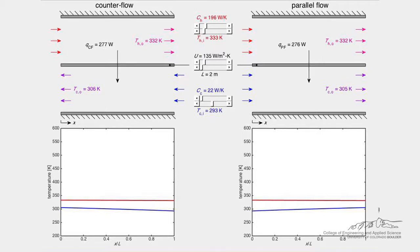As a function of normalized position along the length of a counterflow heat exchanger, shown in the left column, and a parallel flow heat exchanger, shown in the right column.